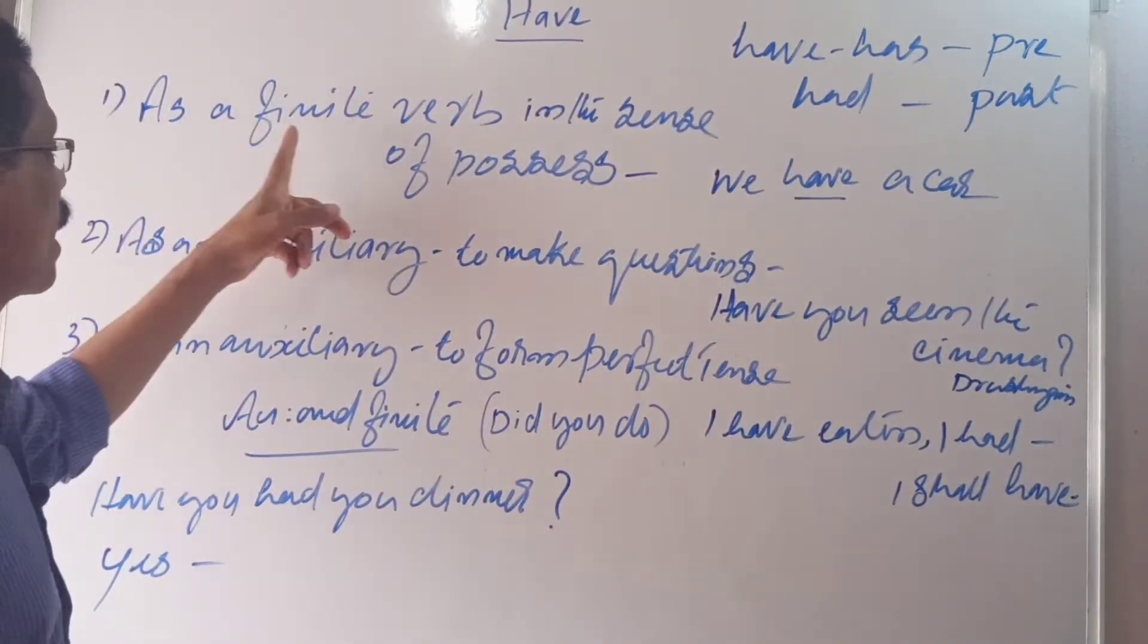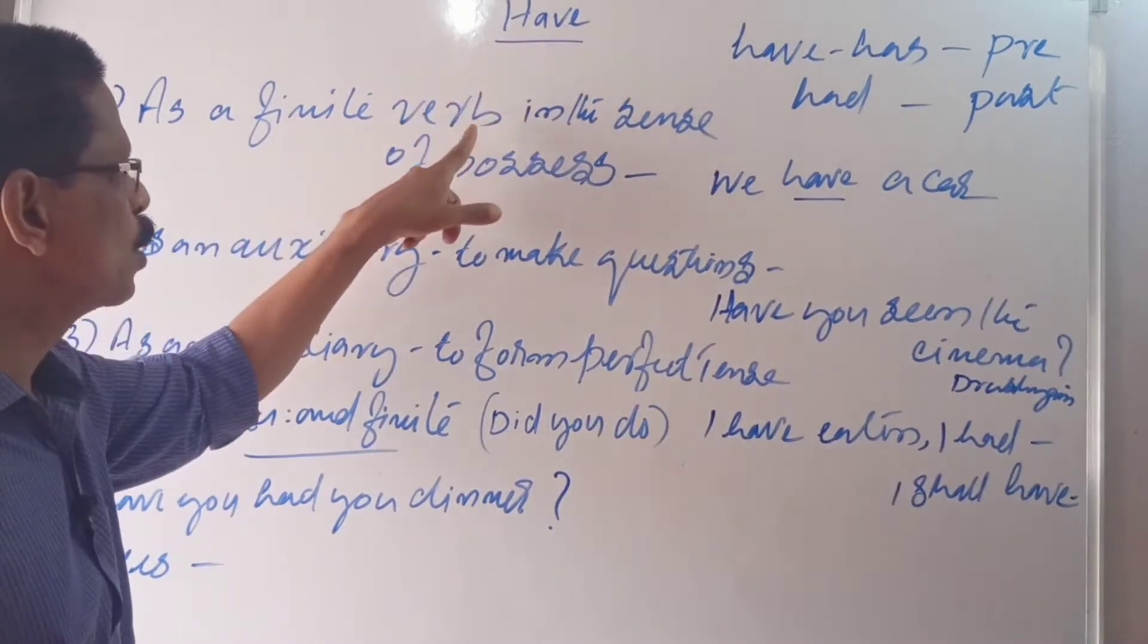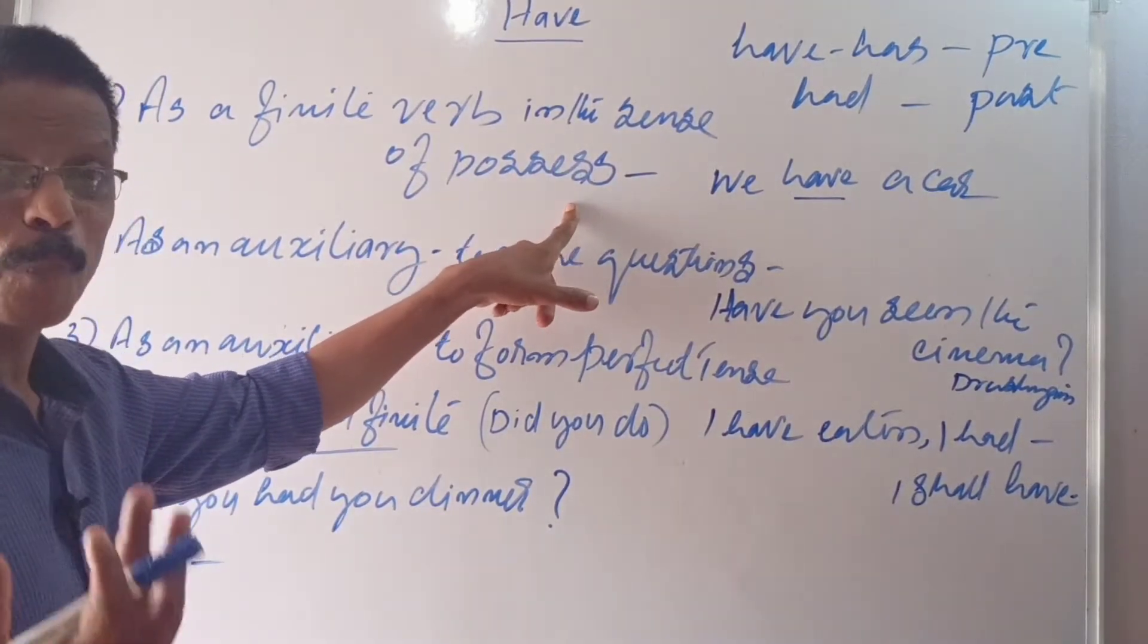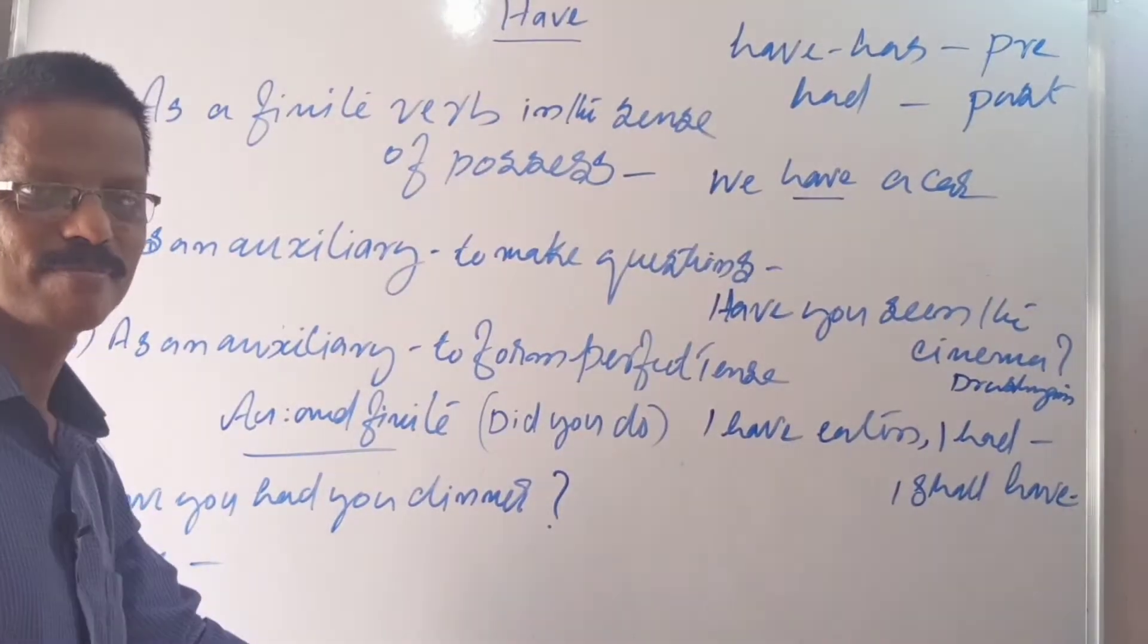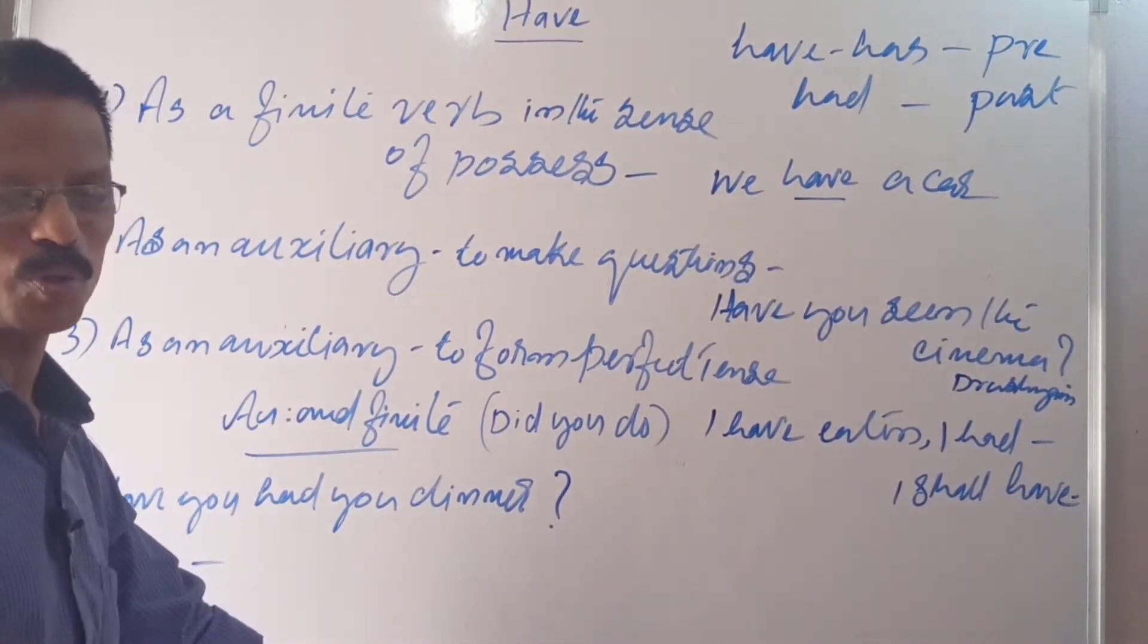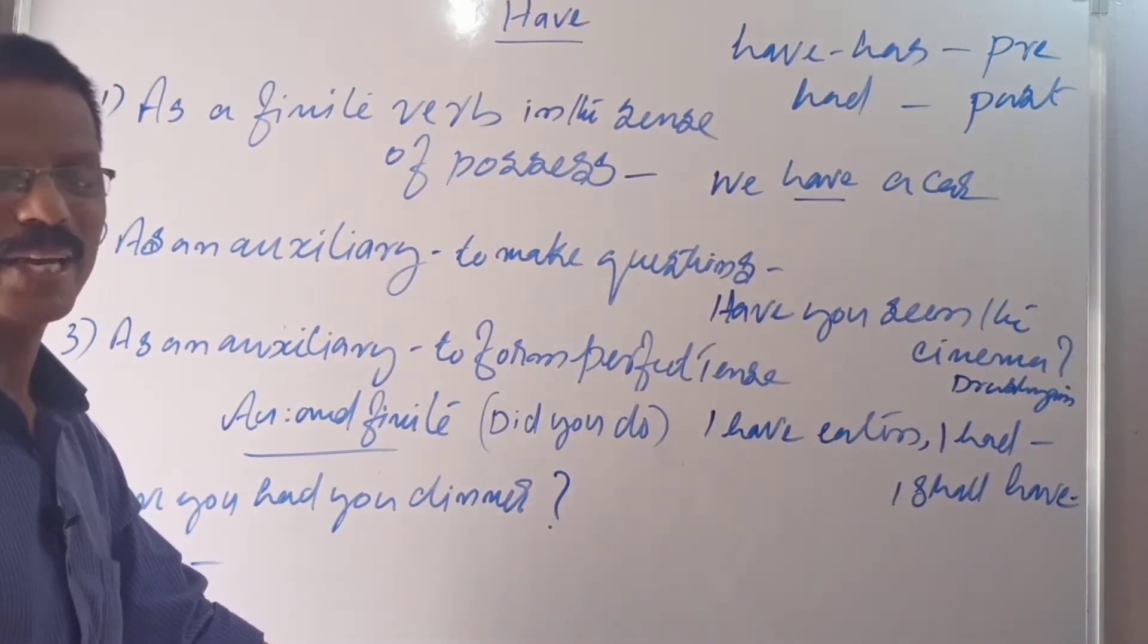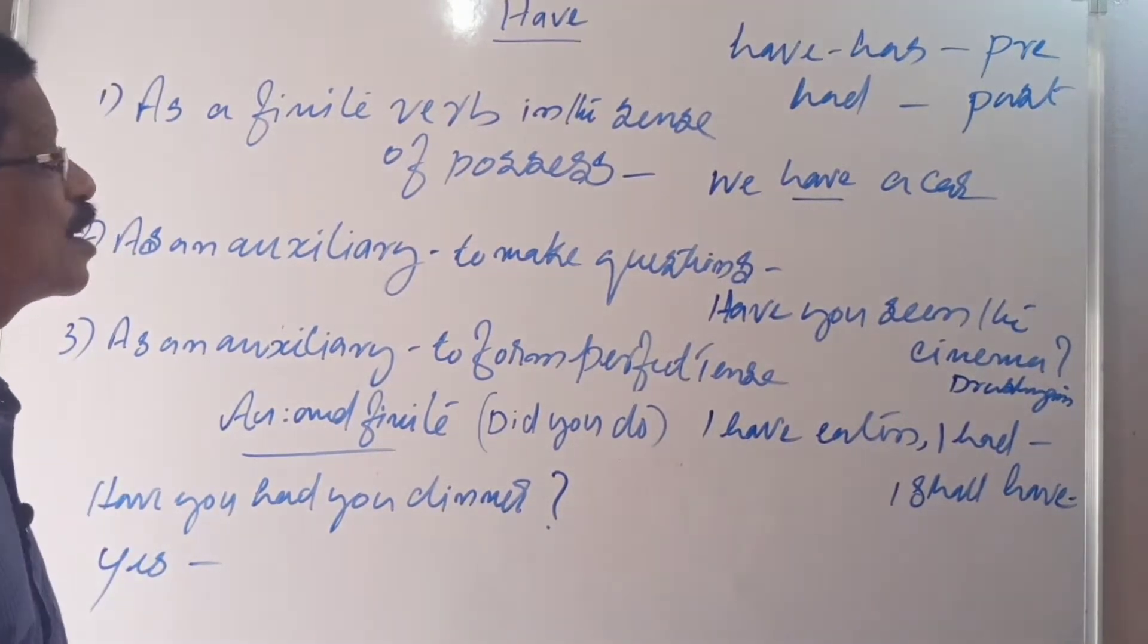Number one, as a finite verb. This word have can be used as a finite verb or regular verb in the sense of possess. I possess something. For example, we have a car. I have a pen. She has a book. I had a car few years ago.